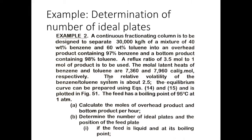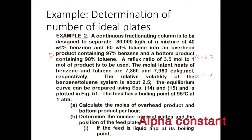This example uses the equilibrium curve to determine the number of ideal plates in a distillation column. A continuous fractionating column is to be designed to separate 30,000 kg/hr of a mixture of 40 weight percent benzene and 60 weight percent toluene into an overhead product containing 97% benzene and a bottom product containing 98% toluene. A reflux ratio of 3.5 moles to 1 mole of product is used. The molar latent heats of benzene and toluene are given, and the relative volatility of the system is about 2.5.